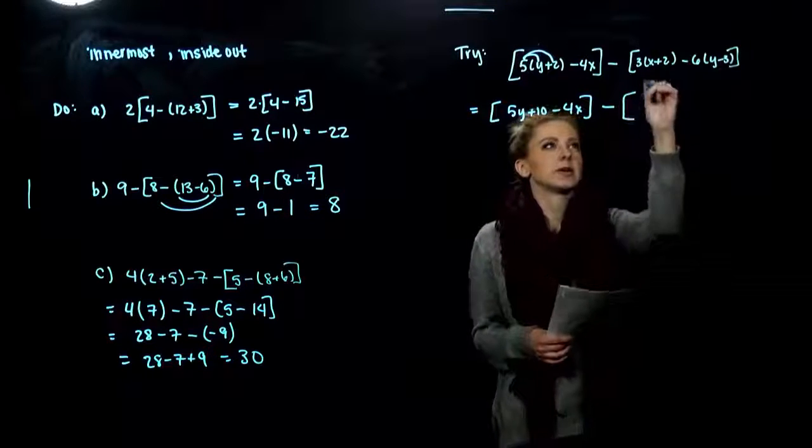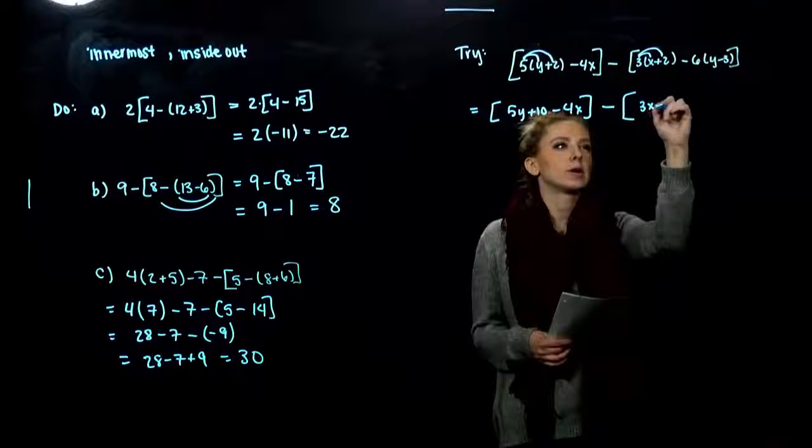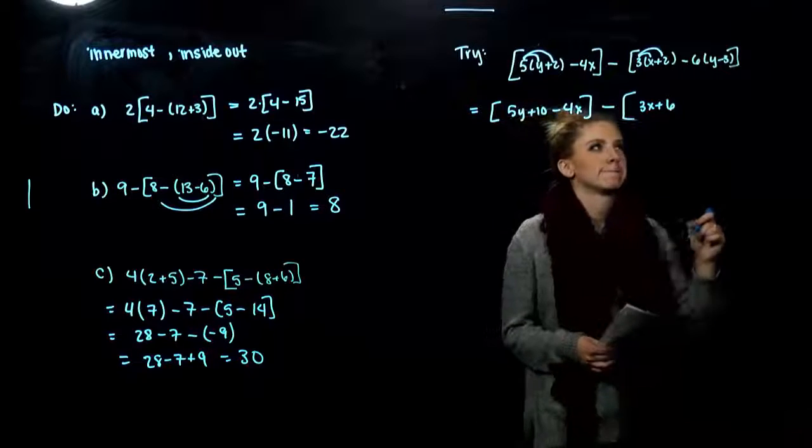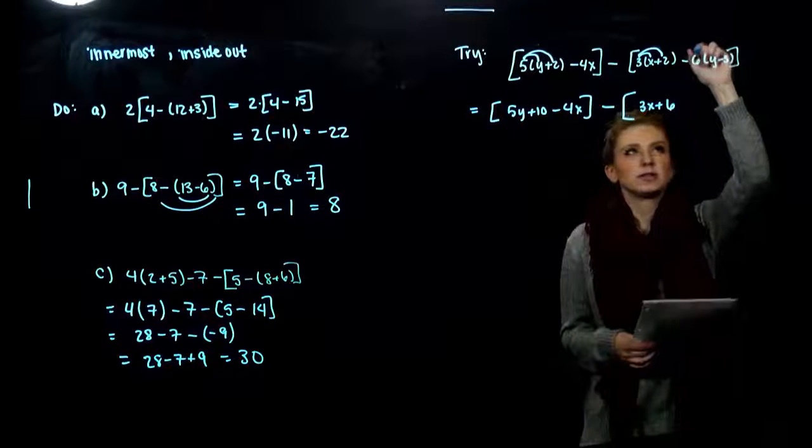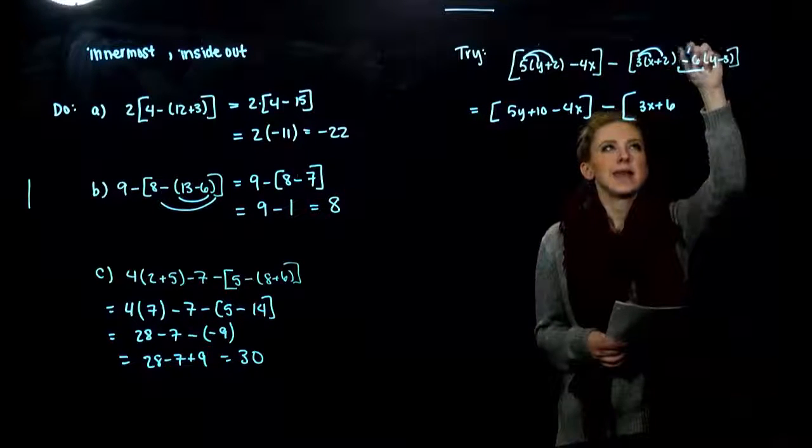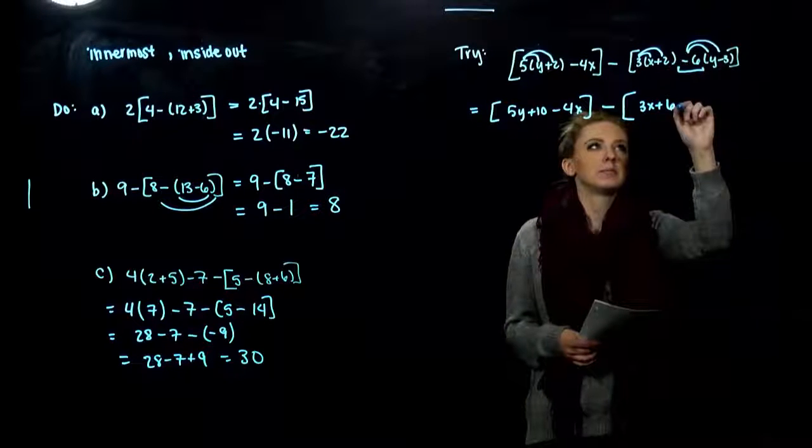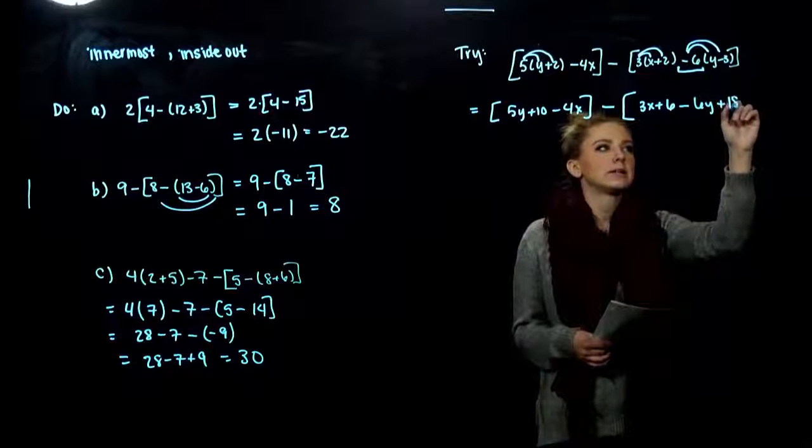And we'll do the same over here. 3 to each term. We'll get rid of our parentheses there. And what do we have to distribute in this case? The constant negative 6 to each of them. So minus 6y plus 18.